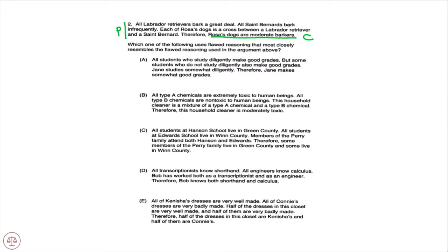To break down this passage: 'all' is sufficient and necessary terminology that introduces a sufficient condition. So our sufficient condition would be Labrador Retriever and our necessary condition would be 'bark a great deal.' The next sentence also has 'all,' so St. Bernard would be the sufficient condition and 'bark infrequently' would be the necessary condition.